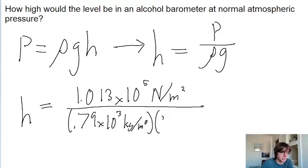times the gravitational acceleration, which is 9.8 meters per second squared. If you put this into a calculator, then we get a height difference of about 13 meters.